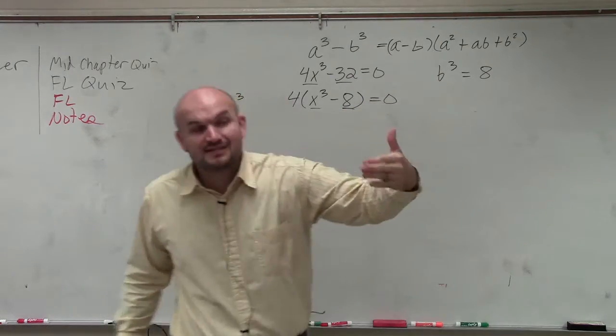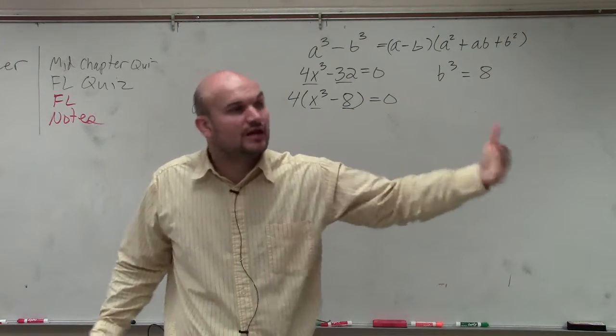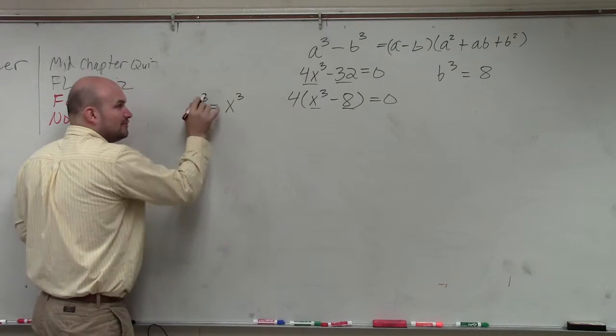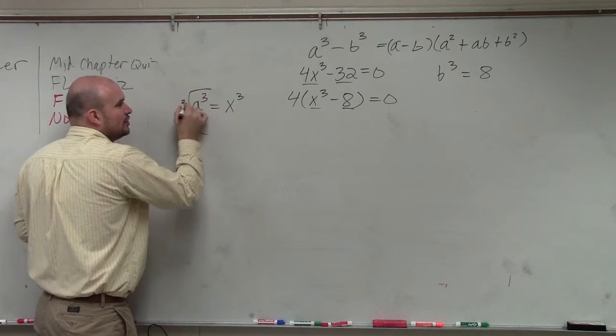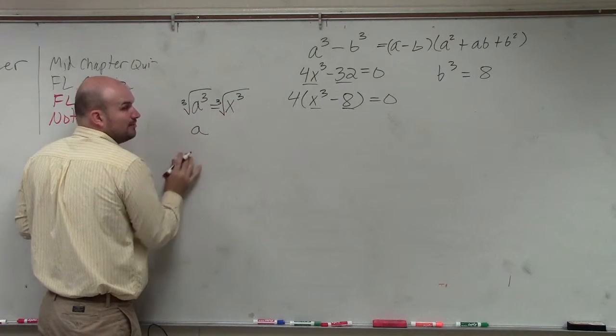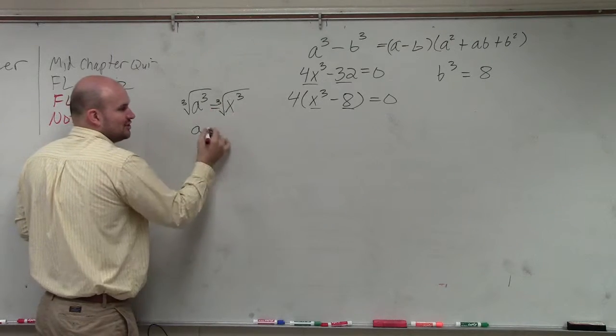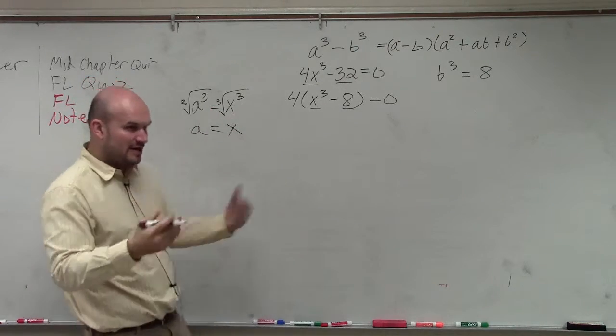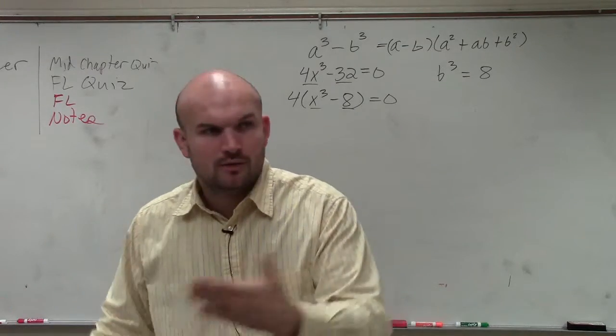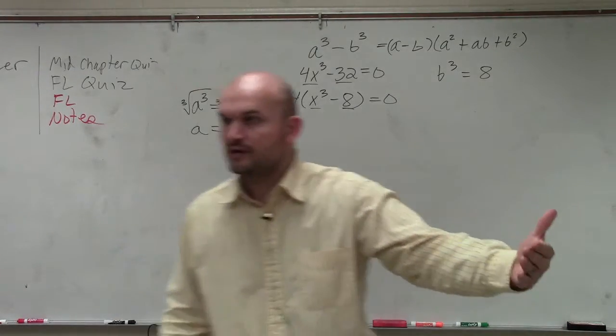So therefore, the best thing to do is figure out what is a, and figure out what is b. Well, if a cubed is equal to x cubed, and I want to figure out a, how do I go from a cubed to a? I'm going to take the cube root. The cube root of a cubed is just a. So if I take the cube root of both sides, the cube root of x cubed is x. The cube root is saying, what number multiplied by itself three times gives you x cubed? Well, x times x times x gives you x cubed.